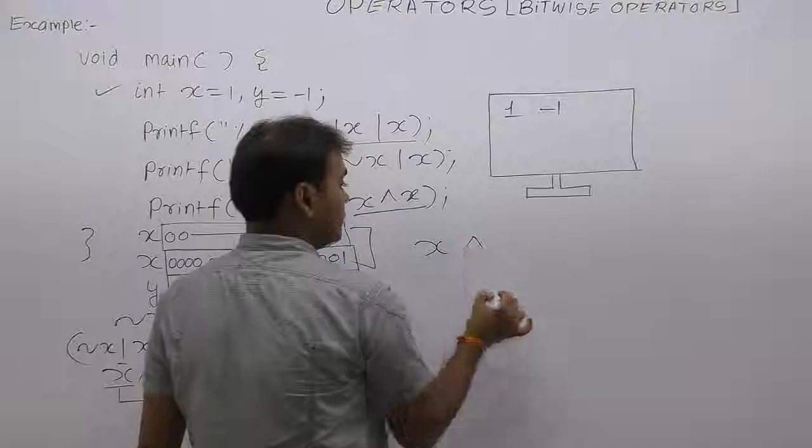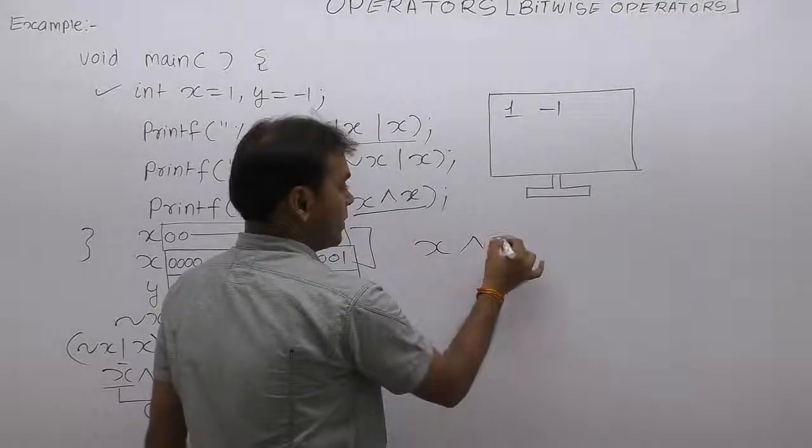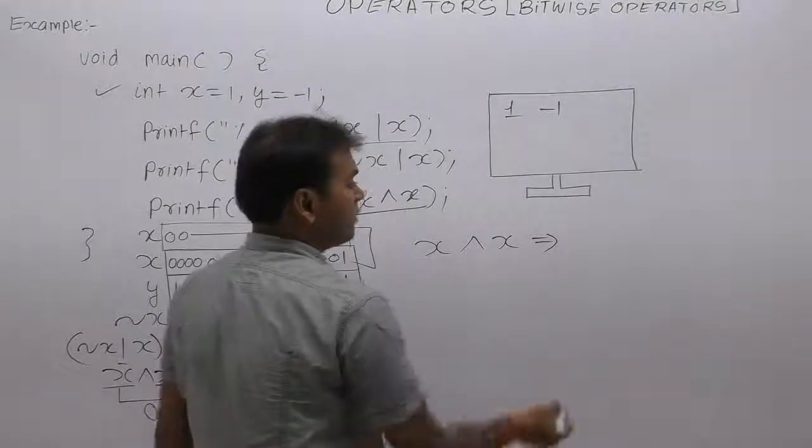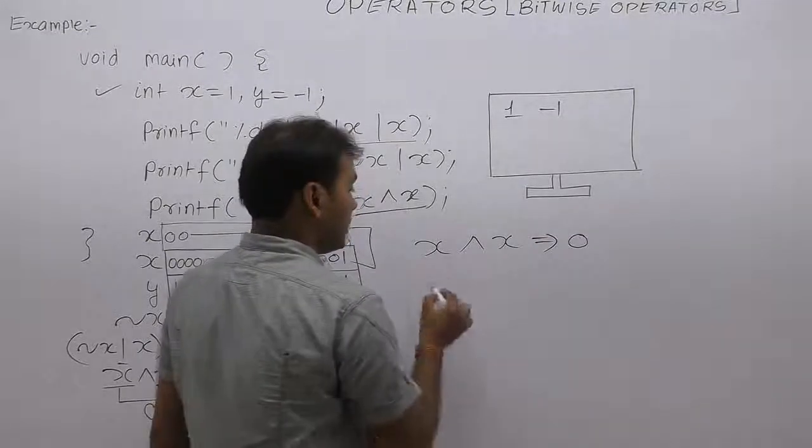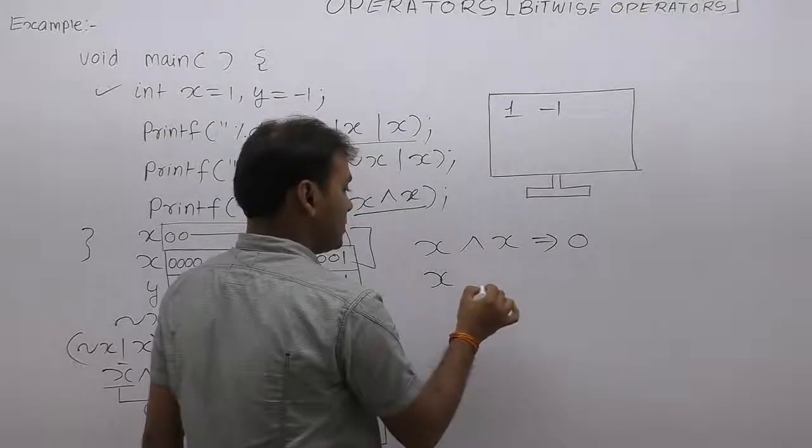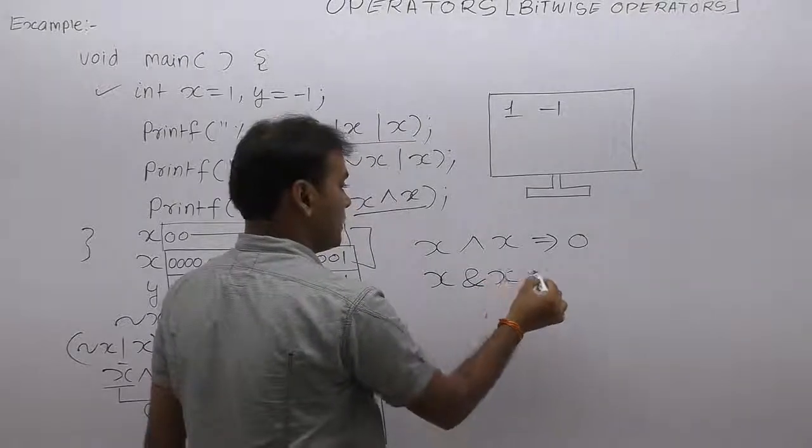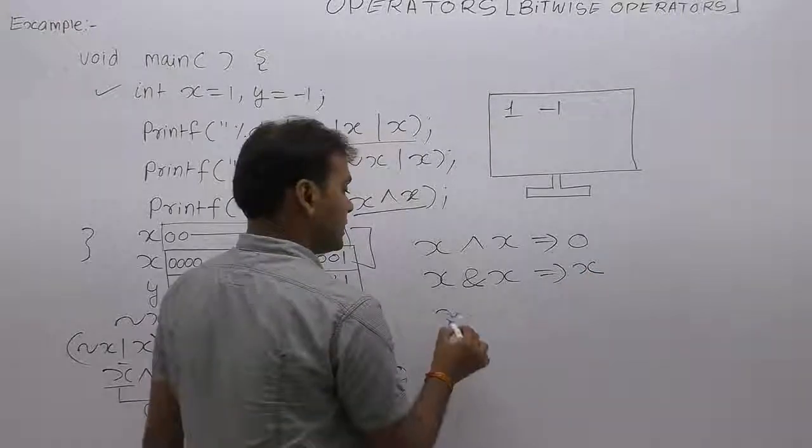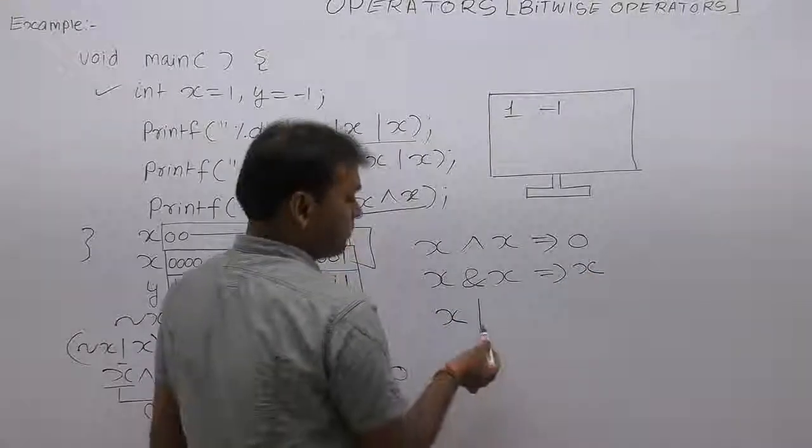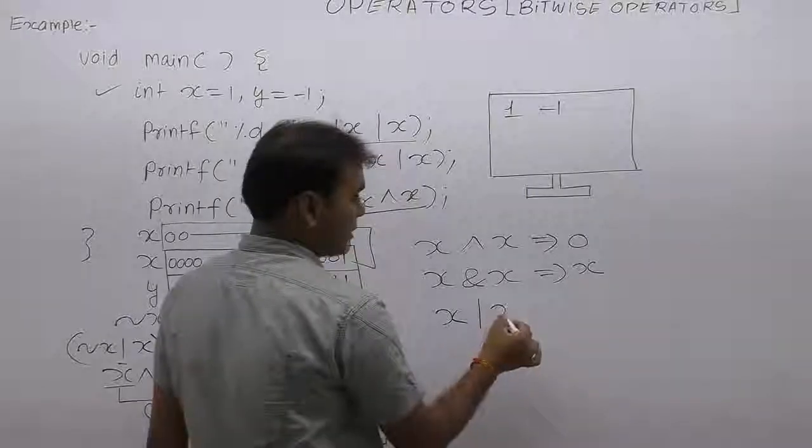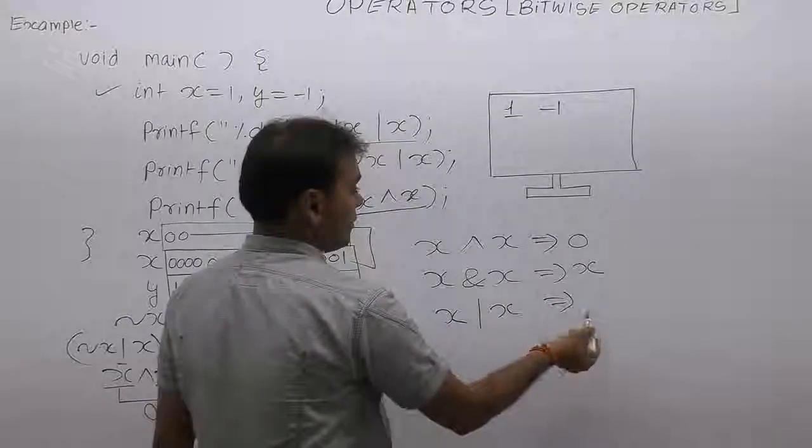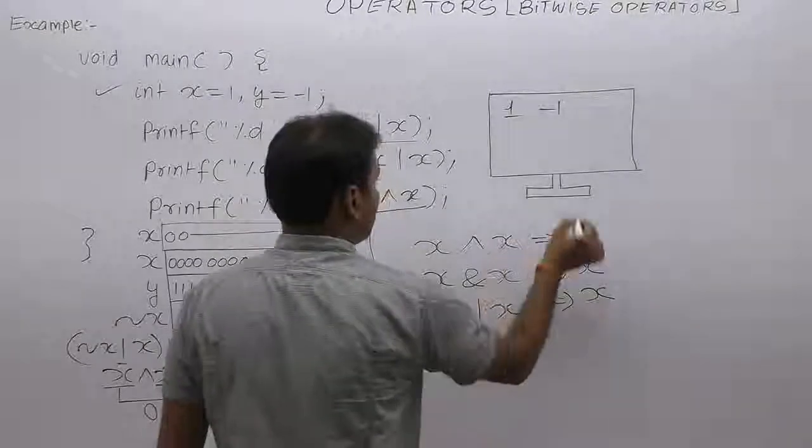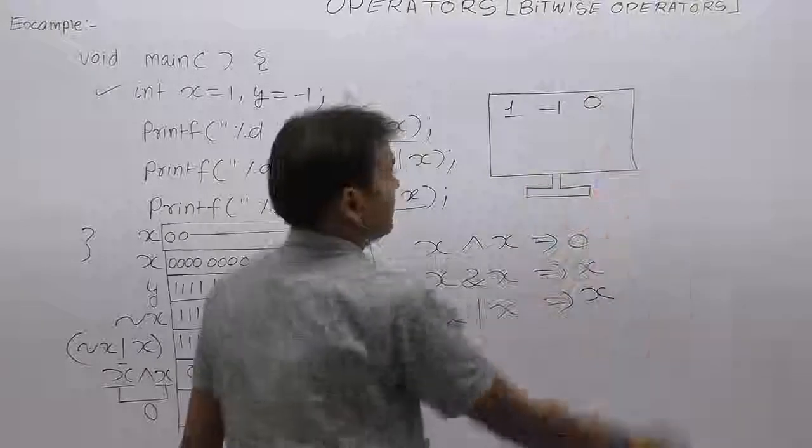One more trick for you: any number XOR with itself always gives 0. Any number AND with itself always gives the same number. Any number bitwise OR with itself also gives the same number. In this case, finally, the result is 0, therefore 0 is printed.